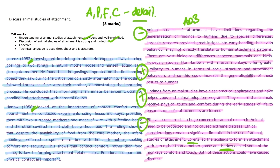The point-explain-consequence structure has been used for each of the three evaluative paragraphs, ensuring that the correct depth and detail is included in the response. Technical language has been used throughout the answer and is appropriate for discussing animal research. Terms such as imprinting, contact comfort, innate behaviour, and attachment relationships are used accurately to describe the concepts studied in each experiment. This demonstrates a strong command of the subject and enhances the quality of the response overall. Use appropriate psychological language whenever you possibly can.